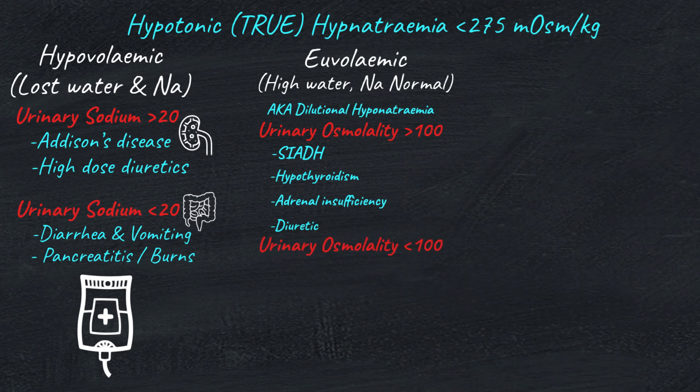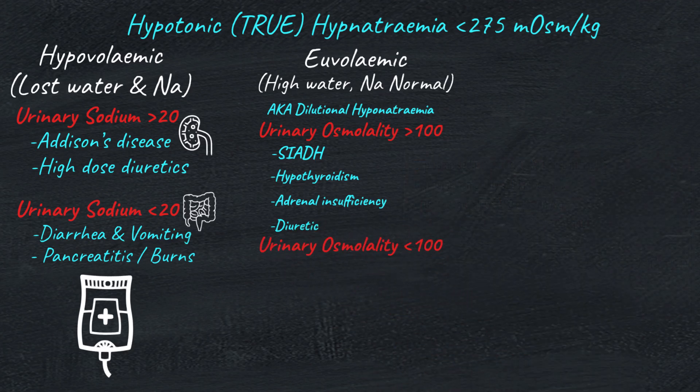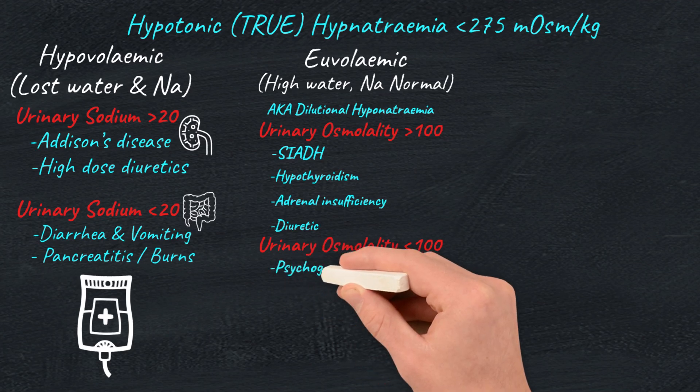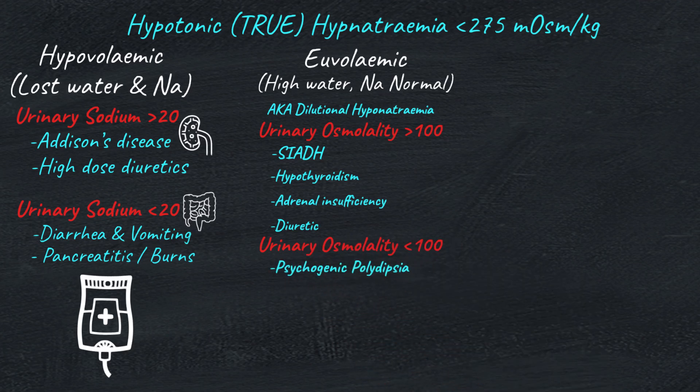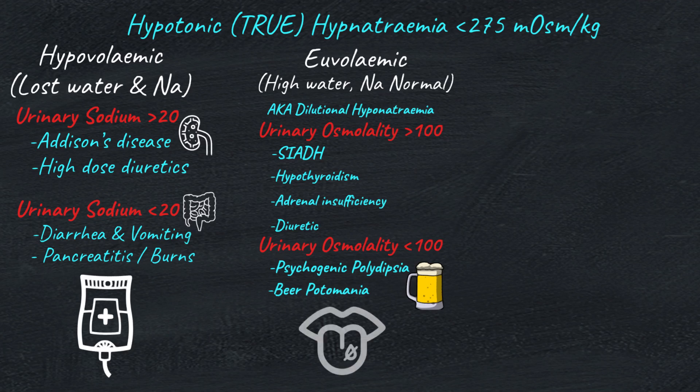If urine osmolality is less than 100, then this can be primary polydipsia — simply drinking too much water — or beer potomania syndrome, a rare and interesting syndrome which happens when you don't eat much but drink a lot of beer. The first-line treatment for all types of euvolemic hypotonic — or in simpler terms, dilutional — hyponatremia is fluid restriction.